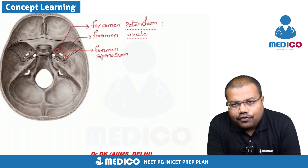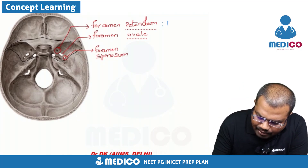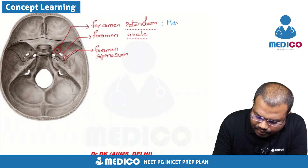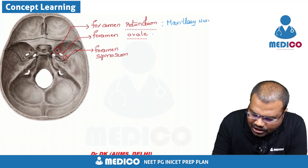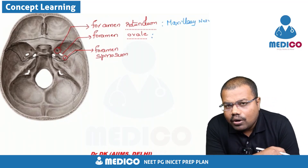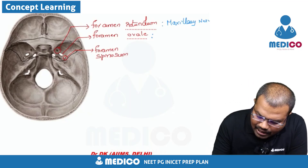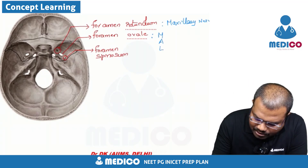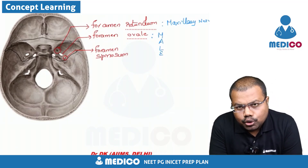Inside foramen rotundum, the structure that passes through is the maxillary nerve. For the second foramen, foramen ovale, remember the mnemonic: MALE through oval. This mnemonic will help you recall the four structures passing through foramen ovale.